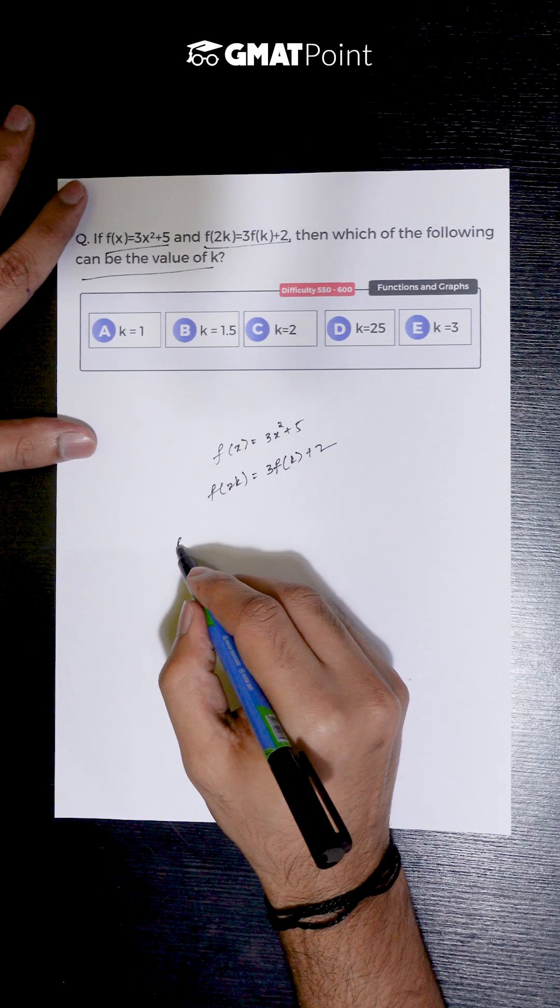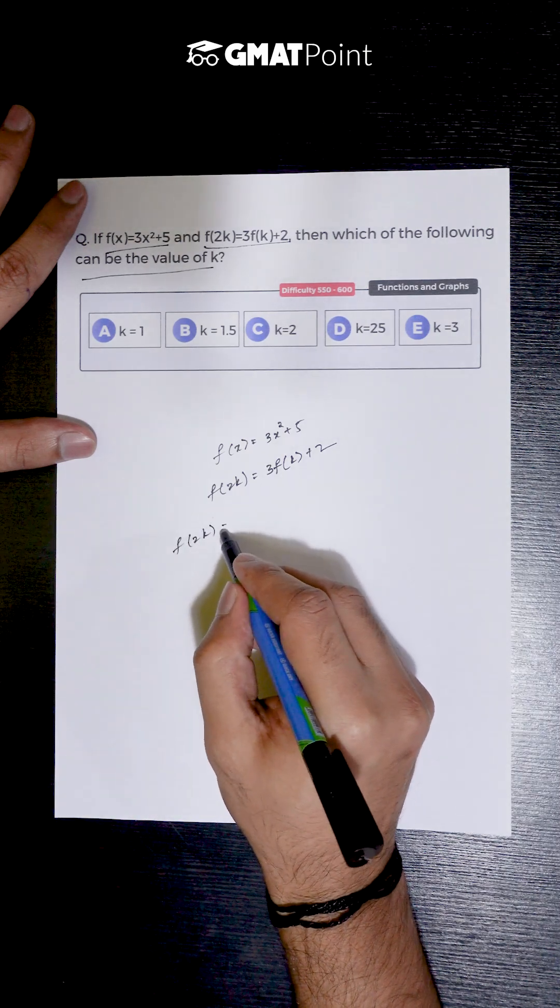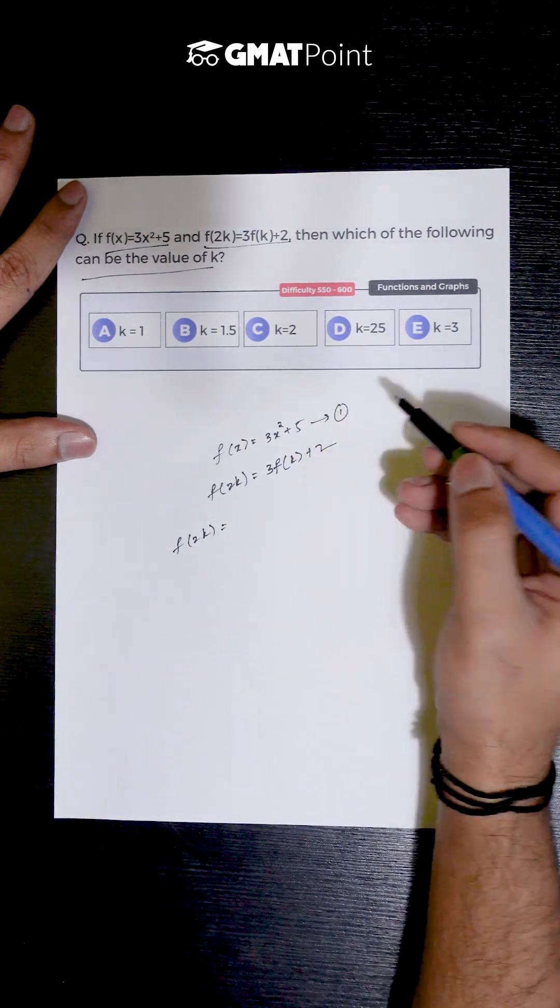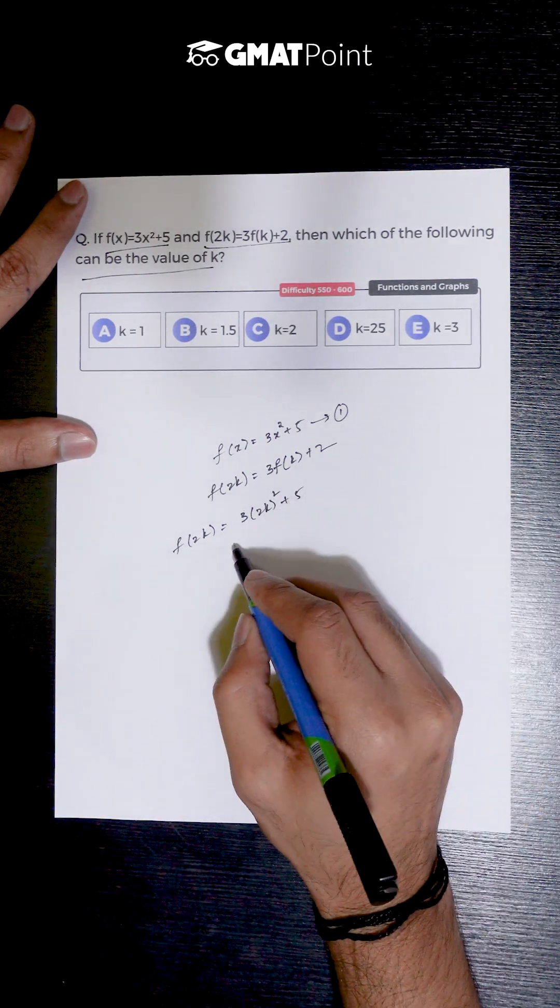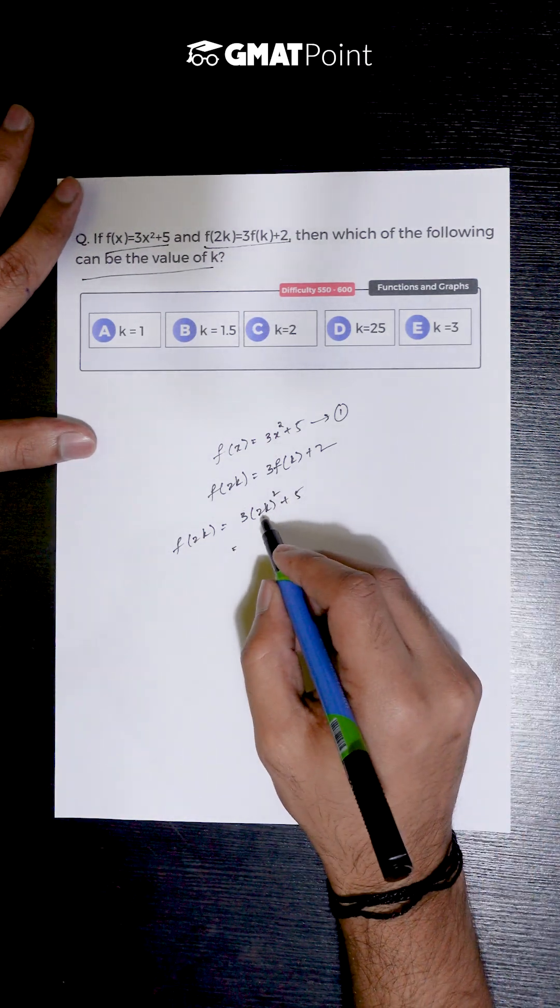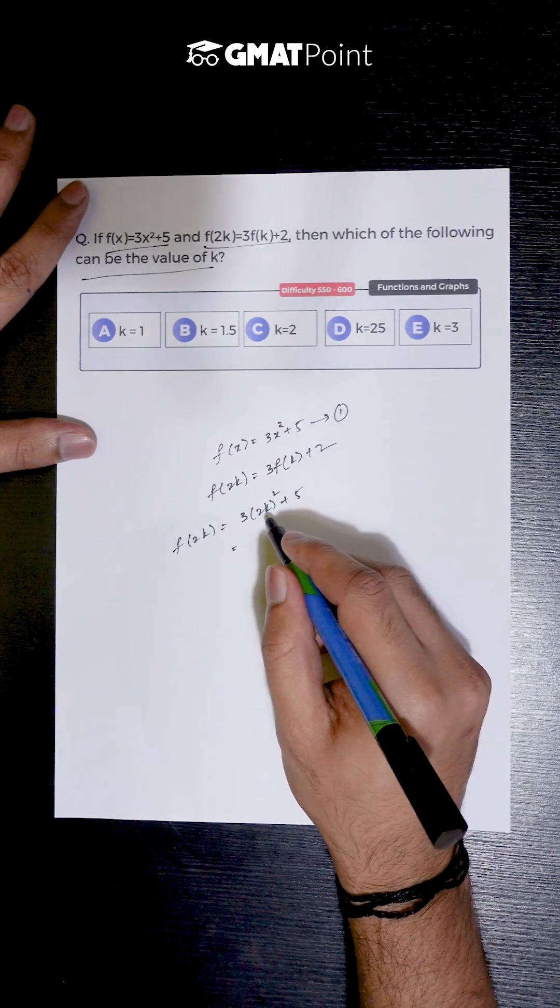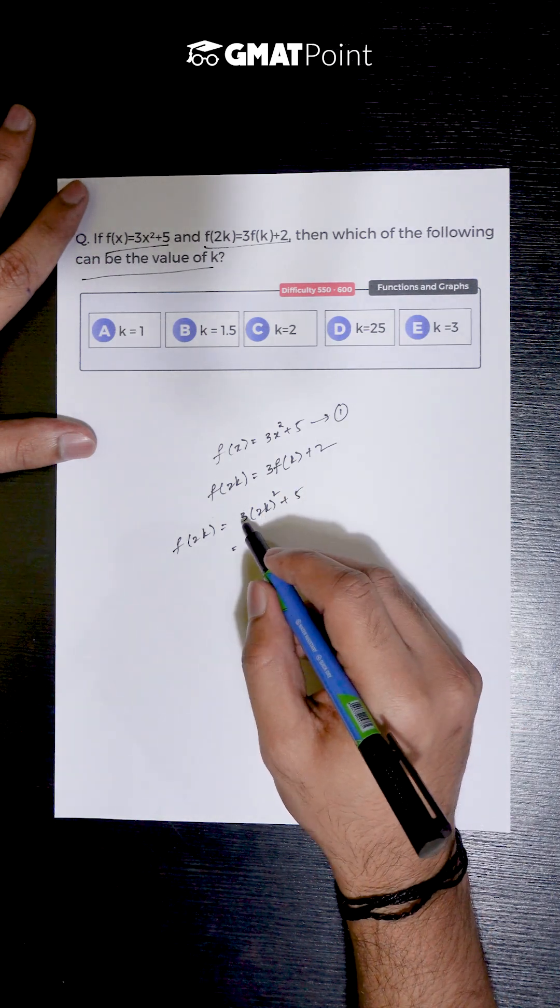Let us first calculate the value of f(2k) by substituting 2k in equation 1. Upon substitution we get 3(2k)² + 5 which is 4k² times 3, giving us 12k² + 5.